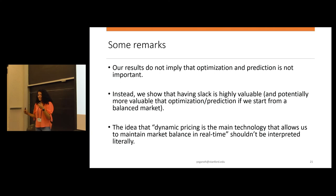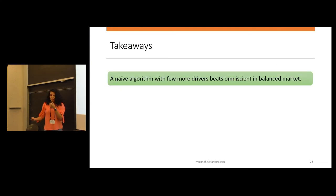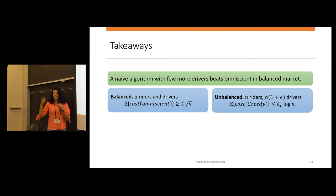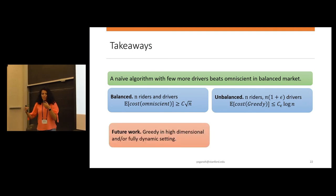So before closing our talk, I just want to give you some remarks about our work. We don't, we are not saying that prediction and optimization in matching is not important. But we are saying that if you are starting with a balanced market, and if you have the ability to attract more supply, it could be reasonable to look into that, because then a simple matching algorithm can do better for you. And so I'm quoting this from Lyft, which says dynamic pricing is the main technology that allows us to maintain market balance in real time. This kind of idea shouldn't be interpreted literally. And just a recap of what we talked about today. We said that a naive algorithm like greedy with a few more drivers can beat omniscient in a balanced market. So the balanced market omniscient was growing with the square root n, while greedy in an unbalanced market was bounded by log n. And it's nice to see what happens for greedy in high-dimensional and fully dynamic settings. And with that, I thank you for your attention.